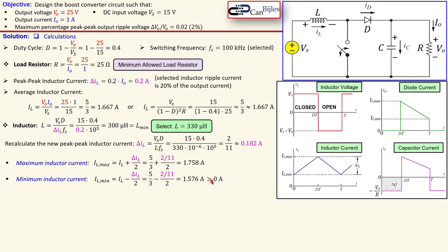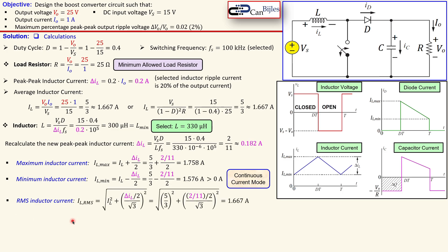Since the minimum inductor current of 1.576 amps is larger than zero, we are confirmed to be in the continuous conduction mode (CCM), as required. The RMS inductor current is also important for selecting the rated current of the inductor in a practical case. It is given by the square root of the average value squared plus the quantity of peak-to-peak inductor current over 2 divided by the square root of 3, all squared. This gives very close to 1.667 amps — almost the same as the average inductor current.